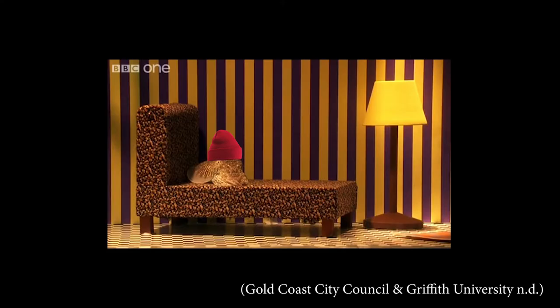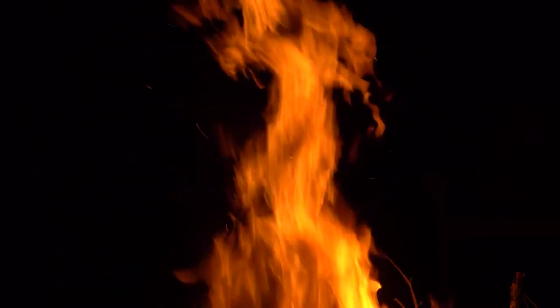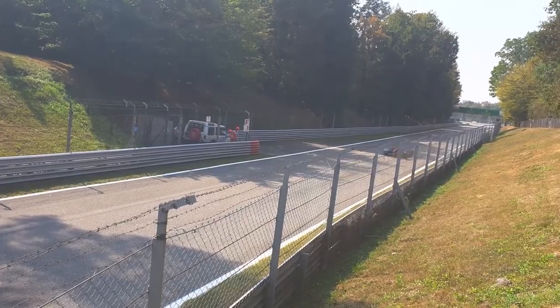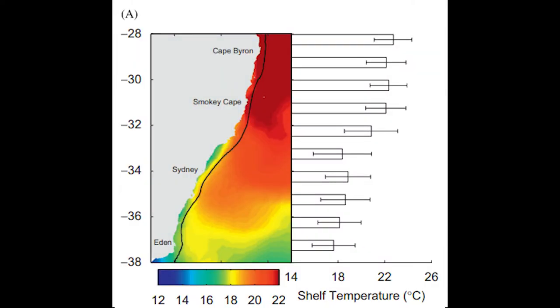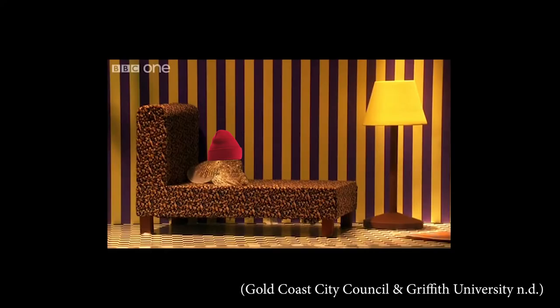Western boundary currents have two main characteristics: they're warm and they're fast. These currents run from the equator towards the poles, transporting warm water from low latitudes to high latitudes. Furthermore, because of physical properties, western boundaries act as marine highways along our coasts. Our own East Australian Current flows up to speeds of 4 knots and can be as narrow as 15 kilometers.